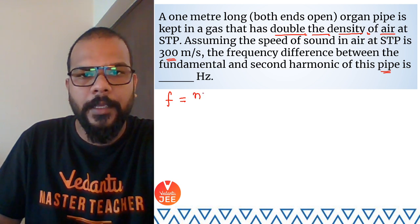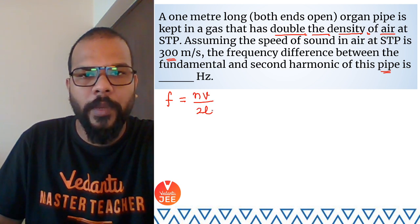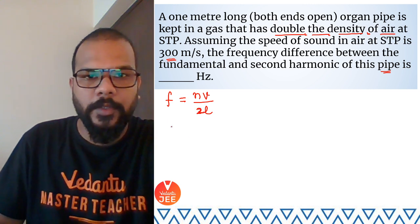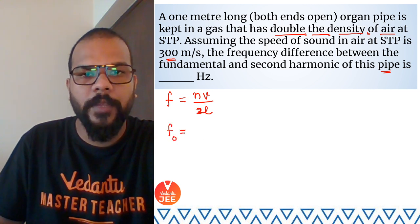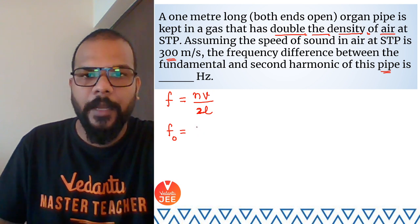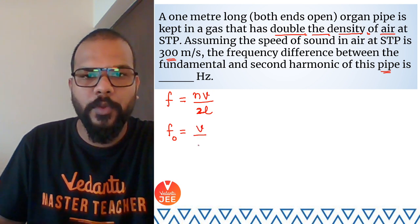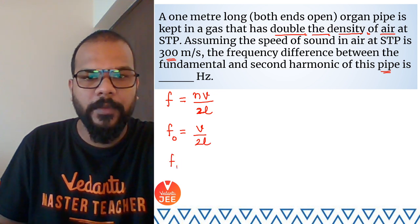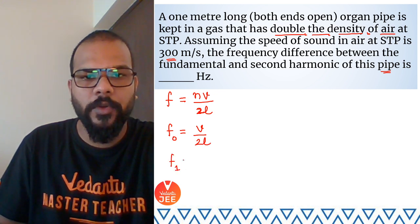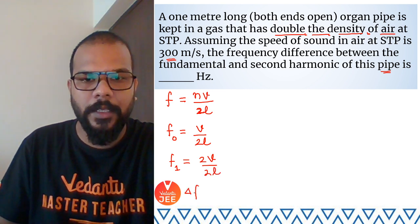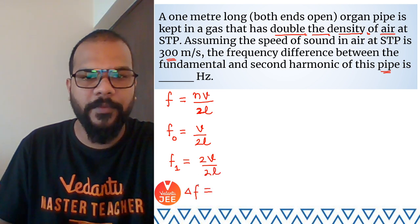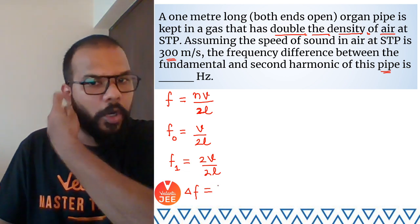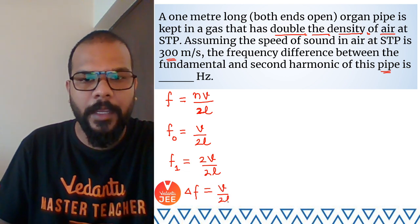We know that in organ pipes the frequency is related to velocity as nv/2L, where n is the harmonic number. For the first harmonic (fundamental frequency), n=1, so it will be v/2L. For the first overtone or second harmonic, it becomes 2v/2L. The question asks us to find the difference f1 minus f0, which works out to v/2L.